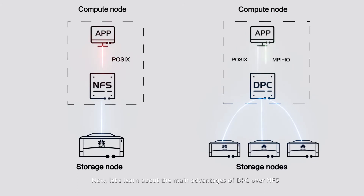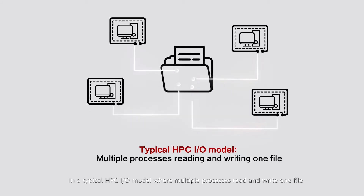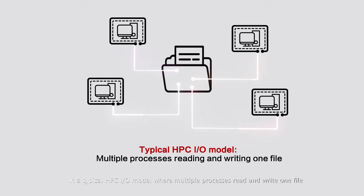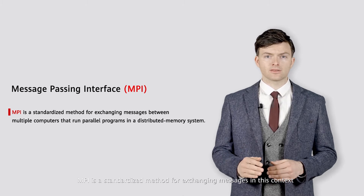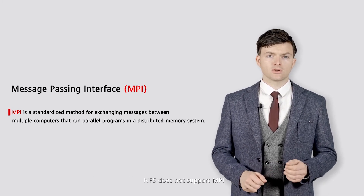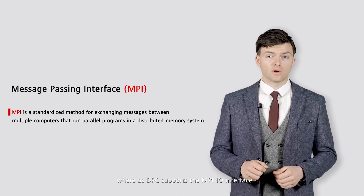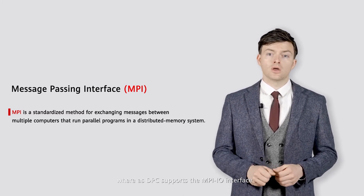Now let's learn about the main advantages of DPC over NFS. In a typical HPC-IO model where multiple processes read and write one file, threads must cooperate with each other to avoid read and write conflicts. MPI is a standardized method for exchanging messages in this context. NFS does not support MPI, whereas DPC supports the MPI-IO interface, which can significantly improve IO interperformance.